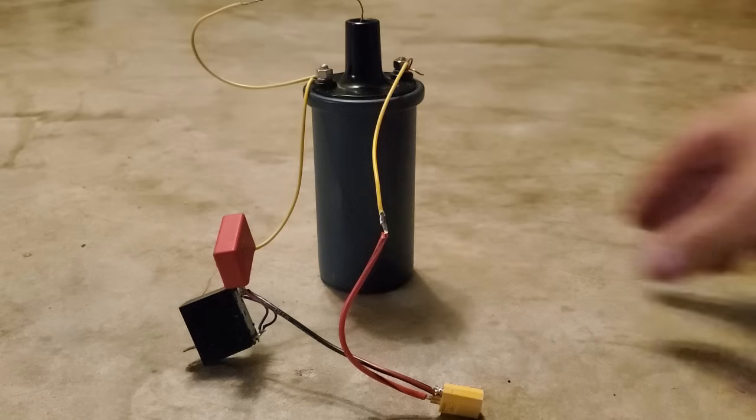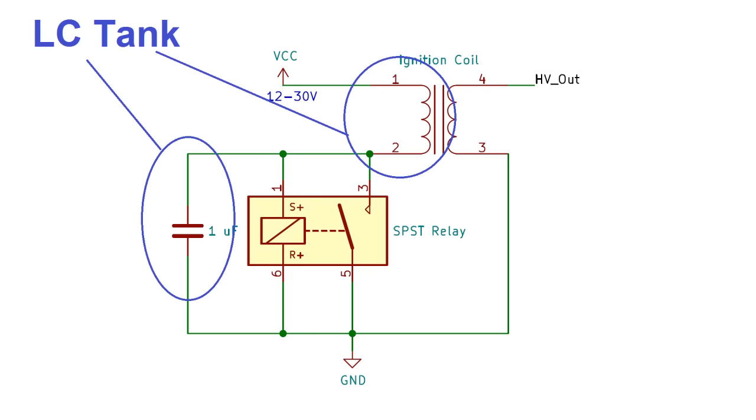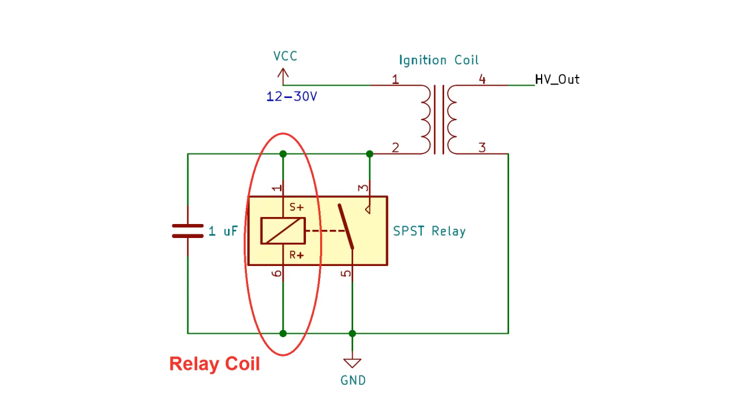Let's start with this one, which only requires a relay and a capacitor. This is about as simple as you can get. The primary coil and a small capacitor across the relay terminals forms an LC tank, and as it oscillates, current goes in and out of the relay coil, which turns the relay switch on and off. Let's see it in action.